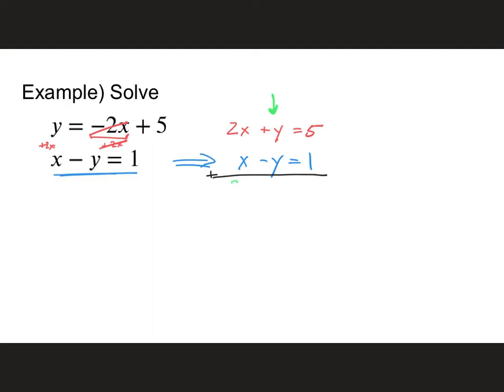2x plus x gives me 3x. And then positive y and negative y, they will cancel each other out, equals 5 plus 1 is 6. And I can go ahead and divide both sides by 3. I'll end up with x equals 2, which, if you remember, was the same x value we had on the previous problem, which was the same problem, so it shouldn't surprise us that x is equal to 2.